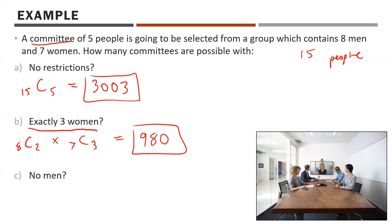What about no men on the committee? If there are no men, we only choose from the seven women — the eight men might as well not exist. So it's 7C5, which gives us 21 possible all-female committees.